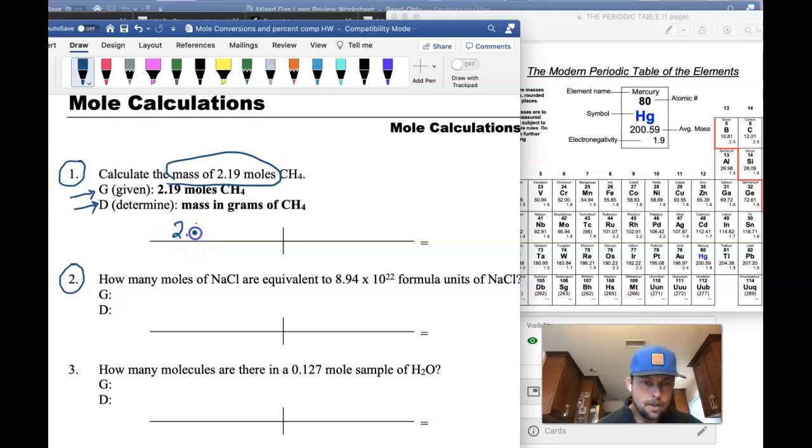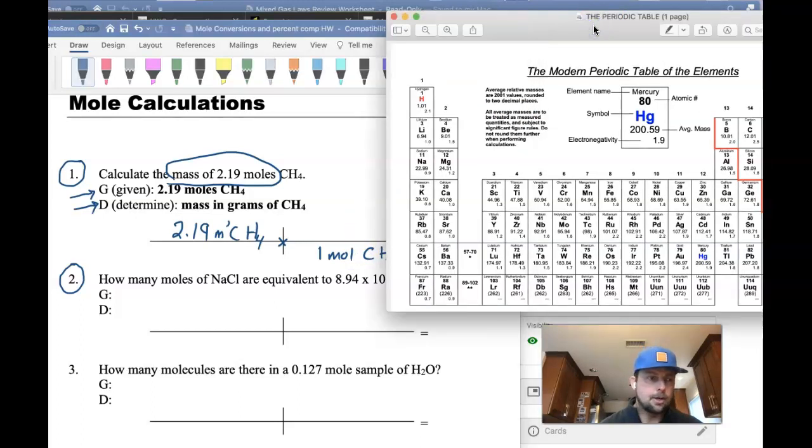So I'll put 2.19 moles of CH4 here, and then this is our multiplication spot right here. And we're going to put moles of CH4 on the bottom, or 1 mole of CH4 on the bottom. And then by looking at the periodic table, I can see that each carbon weighs 12.01 grams per mole and each hydrogen weighs 1.01 grams per mole.